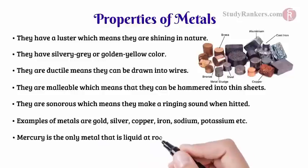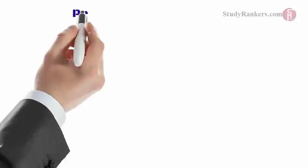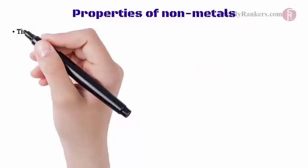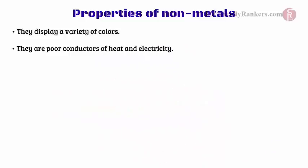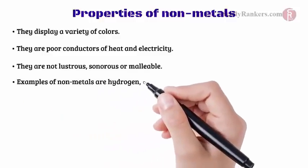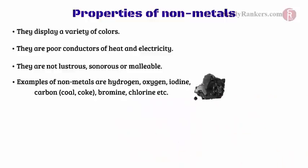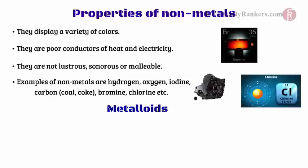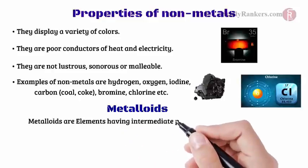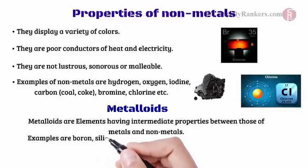Mercury is the only metal that is liquid at room temperature. Properties of non-metals: they display a variety of colors; they are poor conductors of heat and electricity; they are not lustrous, sonorous, or malleable. Examples of non-metals are hydrogen, oxygen, iodine, carbon, coal, coke, bromine, chlorine, etc. Lastly, the metalloids: elements having intermediate properties between those of metals and non-metals are called metalloids. Examples are boron, silicon, germanium, etc.